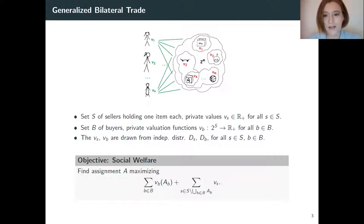Generalizing this problem, you could imagine there are many sellers, many buyers, and buyers are looking to buy more than one item possibly. We look at generalizations where there is a set of sellers who still hold one item each, but now there is a set of buyers, and these people have valuation functions that give them a value for each subset of the items. We still assume that the VS and the VB are drawn from independent distributions, and we still want to maximize social welfare, which is now defined as the sum for all agents over their valuation for the set of items they hold in the end.